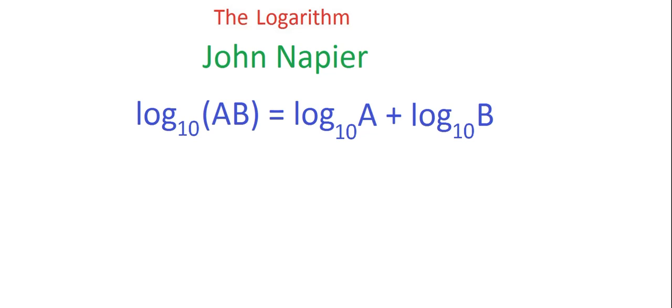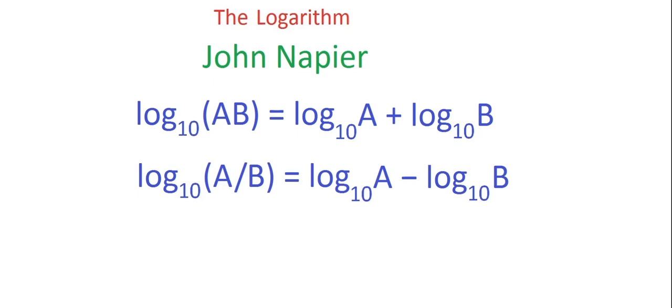To summarize then, the logarithm to a particular base of a product is the sum of the logarithms to that base. The logarithm of a quotient is the difference of the logarithms. John Napier has turned multiplication into addition and division into subtraction. This was a marvelous piece of technology.